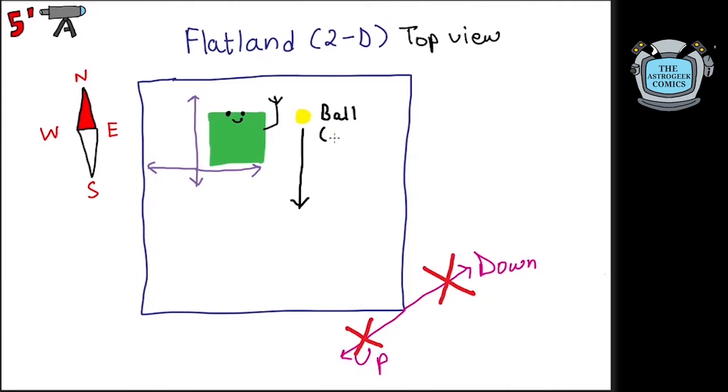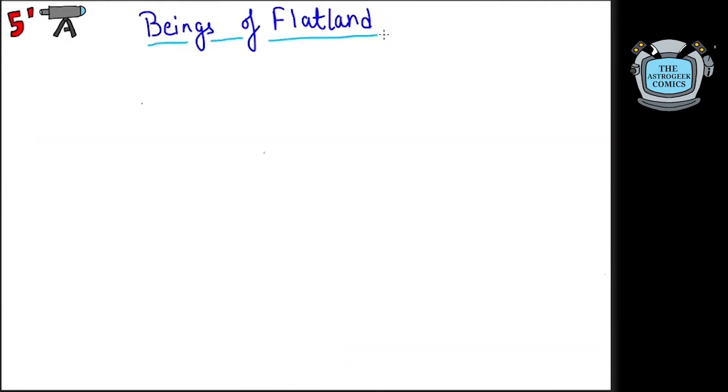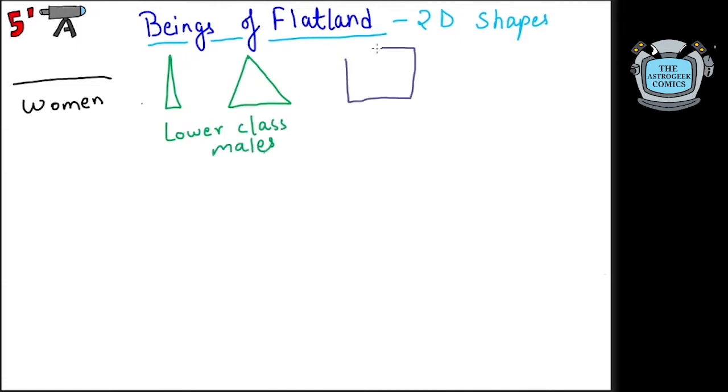There is a natural attraction to the south direction here. Beings here, like the square, are 2D shapes. Women are lines and men are either isosceles triangles, equilateral triangles, squares, pentagons and so on.